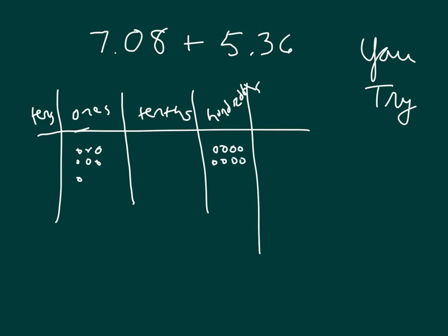For our next addend, that is 5, 3, 4, 5, 3 tenths, and 6 hundredths. Regroup. Left with 4 hundredths there. We have 4 tenths and another regroup.